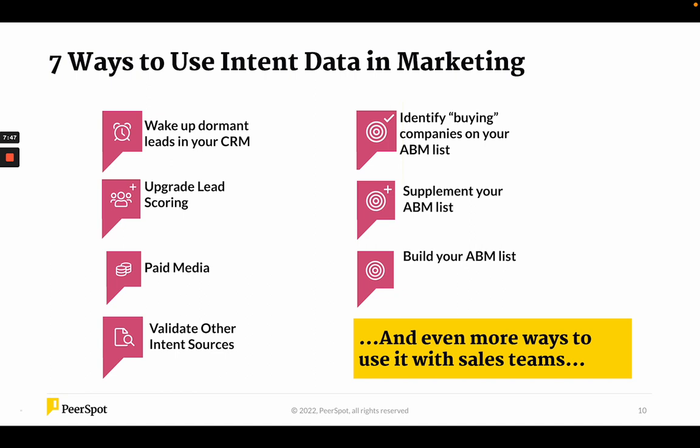Validating other intent sources is more of a comparison — for example, you got intent data from TechTarget that says Home Depot is in a high-intent category, but have they gone and looked at a comparison? Have they talked to reviews, talked to peers, looked at review sites? If you see that gap, you'll probably think they're more top-of-funnel on intent versus bottom-of-funnel.